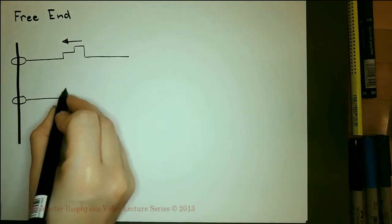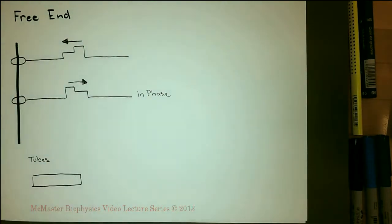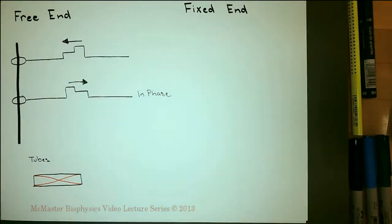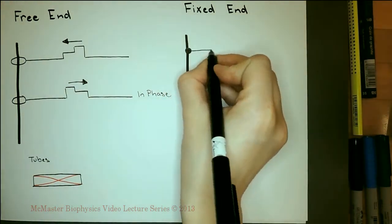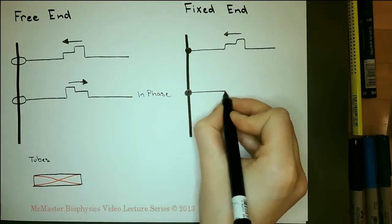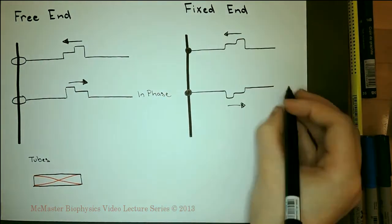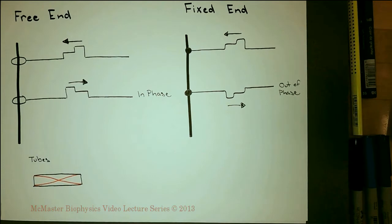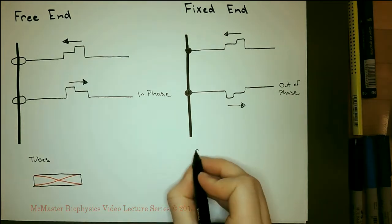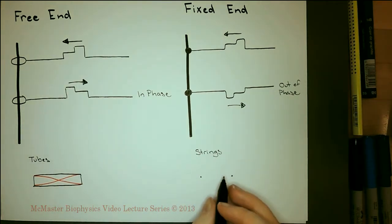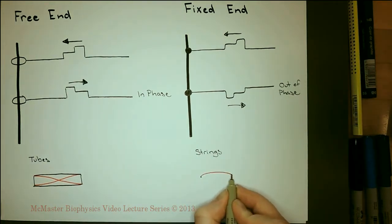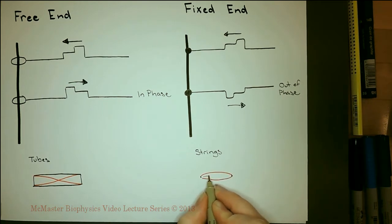Reflections against free ends produce an upright or in-phase reflected wave. Reflections against a fixed end produce an inverted or out-of-phase reflection. Free ends include a string attached to a loop free to move up and down on a pole, and the open ends of tubes or brass instruments. Fixed ends include a string with an immovable end and the strings of stringed instruments.